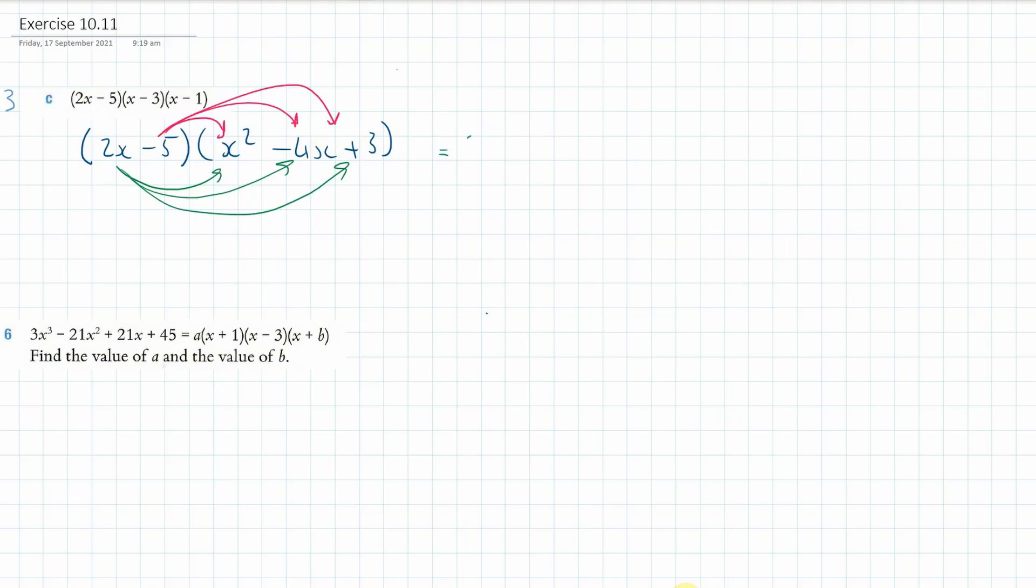So we get 2x³ - 8x² + 6x, and now we do the pink arrows so -5x² + 20x - 15. Now we add all of that together so we gather our like terms.